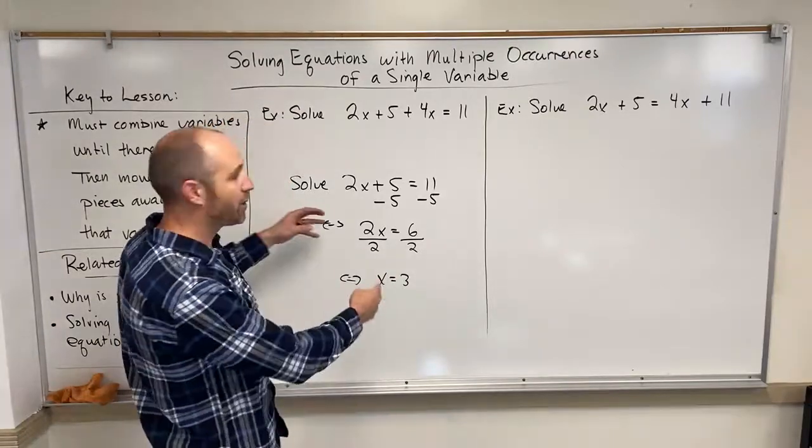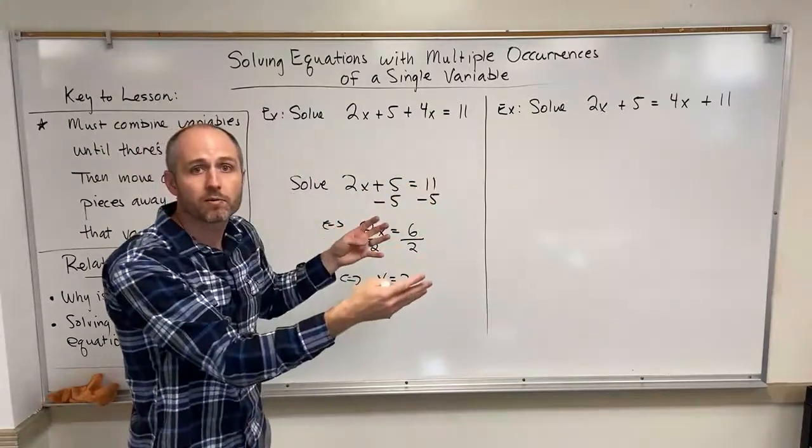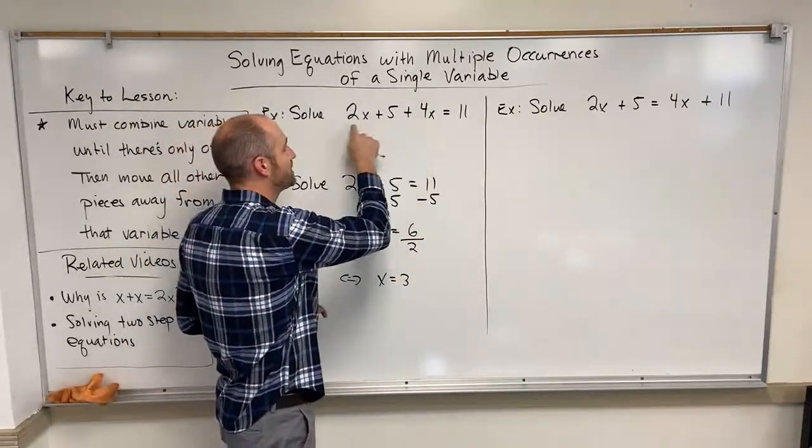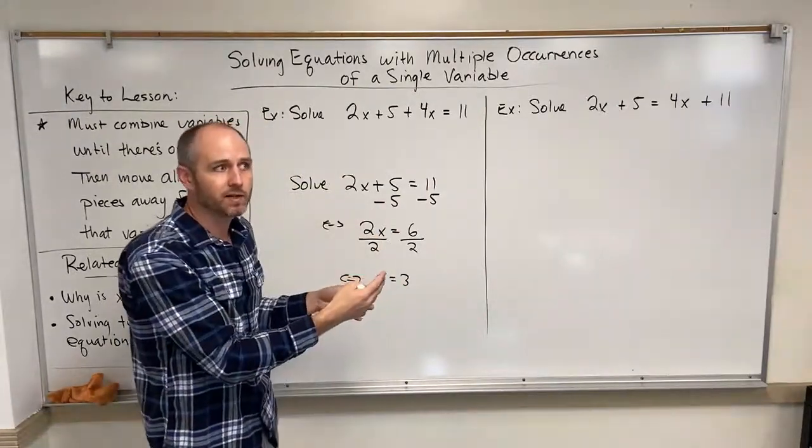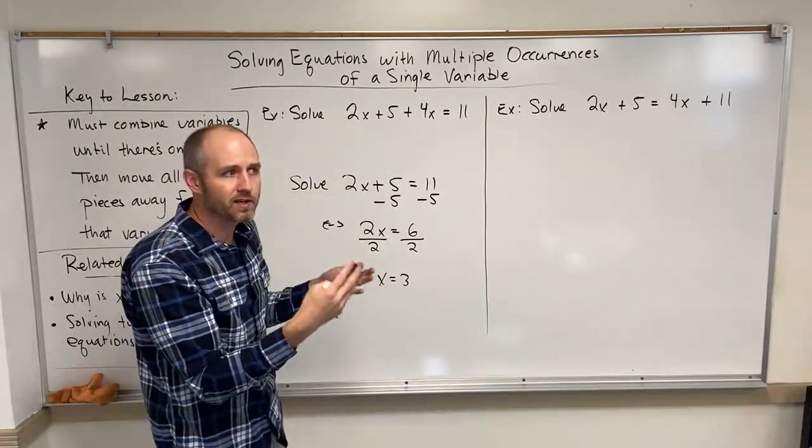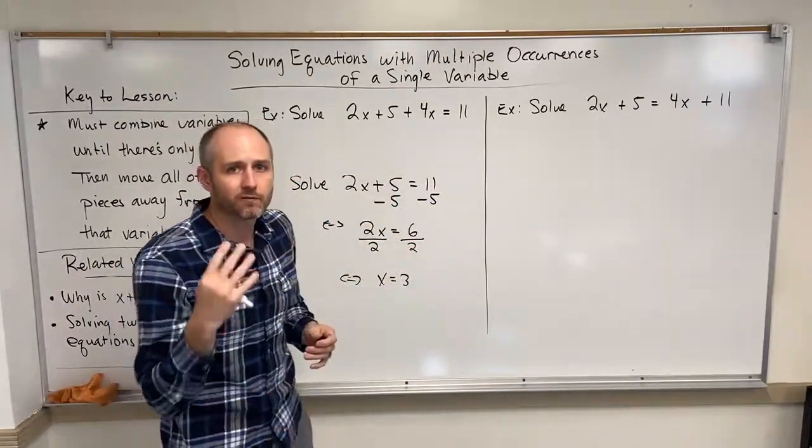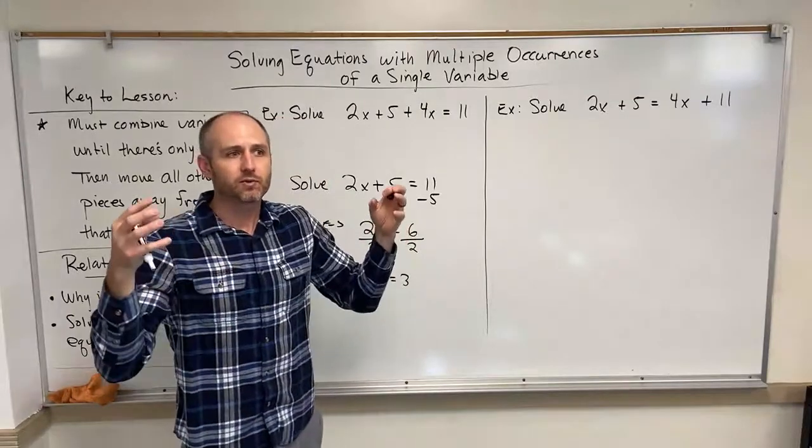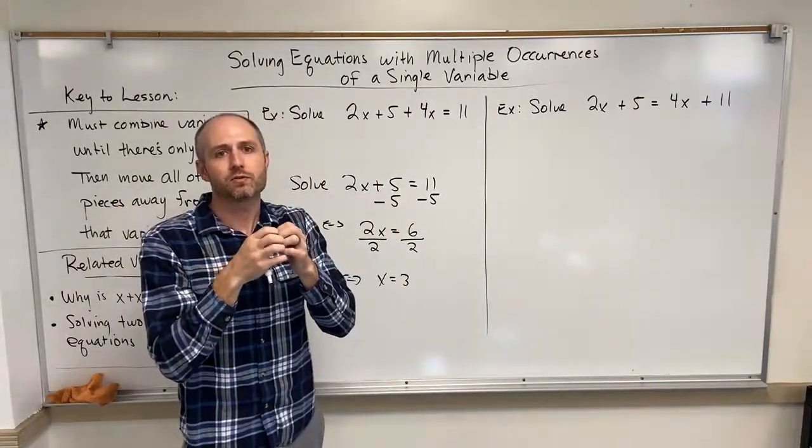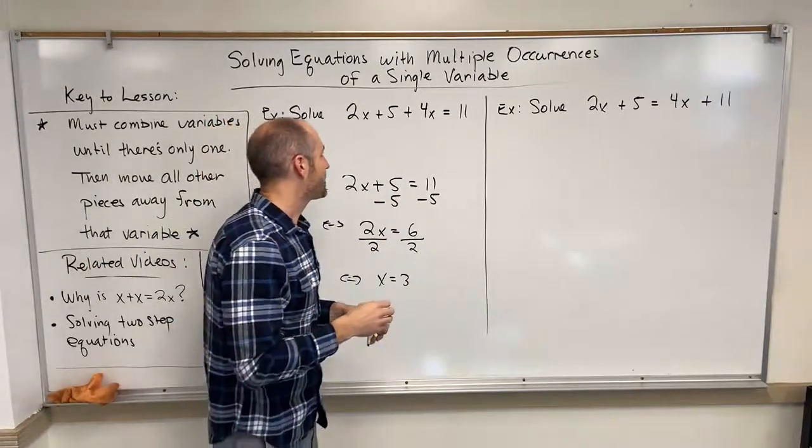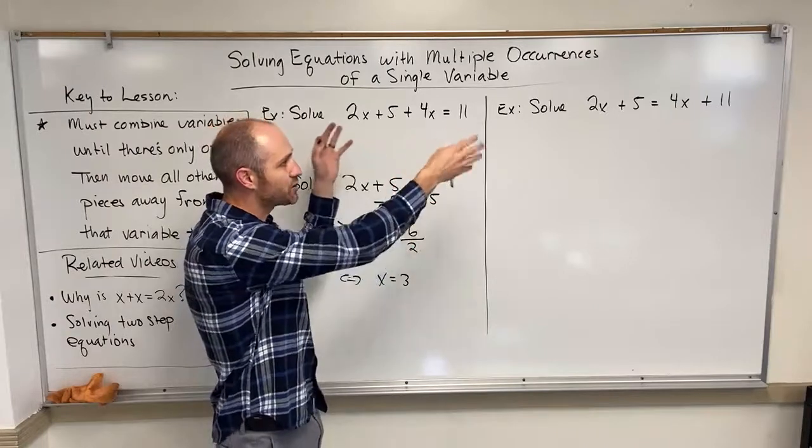Now, if we're going to employ that technique for these equations, we have a little bit of a problem, right? Because there's two occurrences of x. So our method kind of fails a little bit because how are we going to move things away from x when there's more than one of them? So the first thing that we're going to try and do is let's see if we can take those multiple occurrences of that variable and combine them down into a single variable. And that's where we get to these two examples, right?